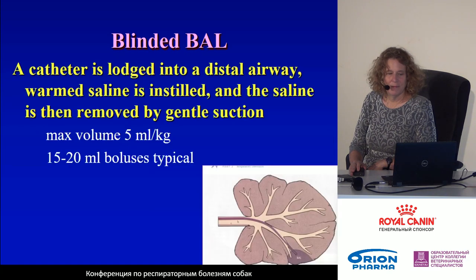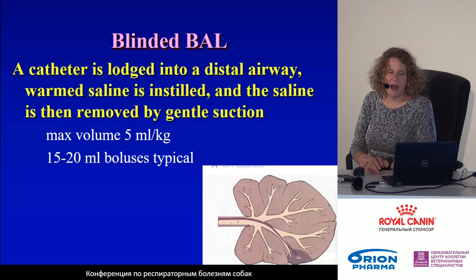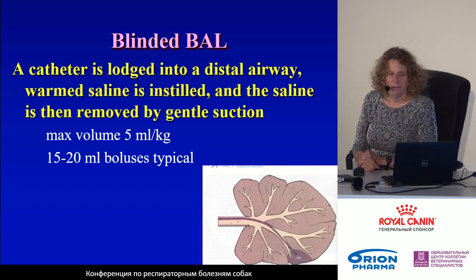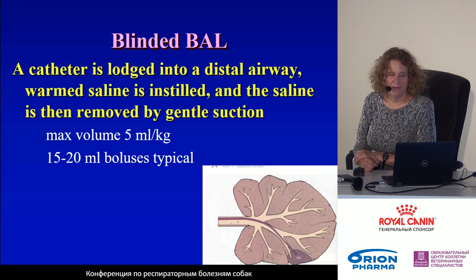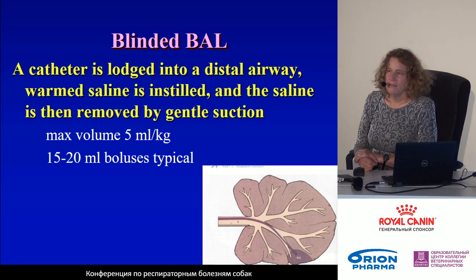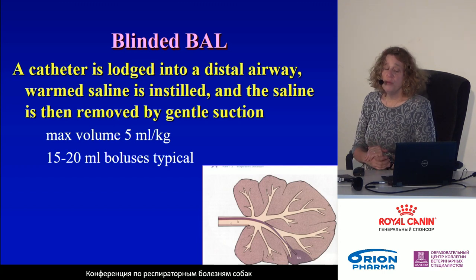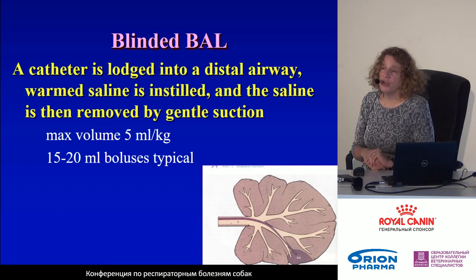In a blinded bronchoalveolar lavage, a catheter will be lodged into a distal airway, warm saline instilled, and then the saline removed by gentle suction. The catheter should penetrate as far as possible into the distal bronchus, then warm saline is introduced and immediately withdrawn with a gentle motion. The maximum volume of fluid is 5 milliliters per kilogram.